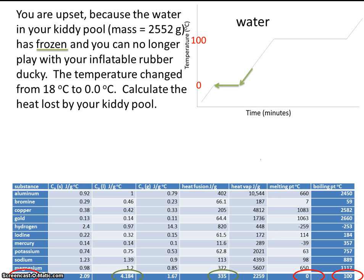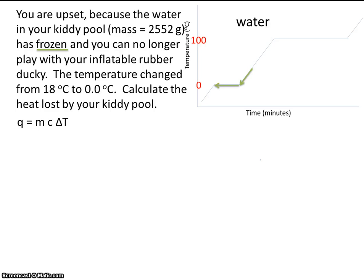We'll need two equations: Q equals MC delta T and Q equals MHF. Everything that gets plugged into here is specific for this slope. Everything that gets plugged in here is specific for this plateau.